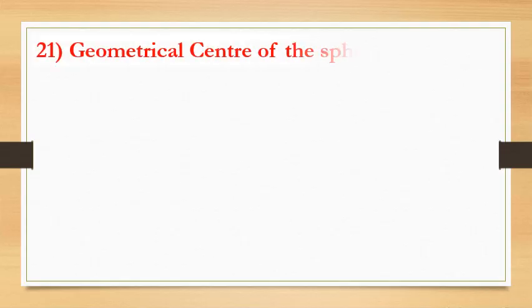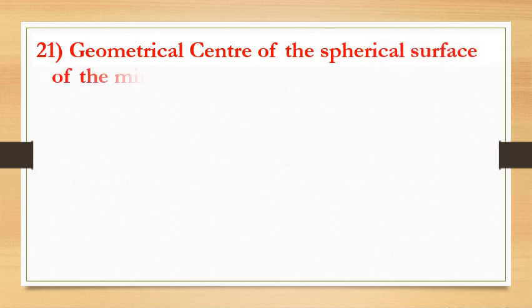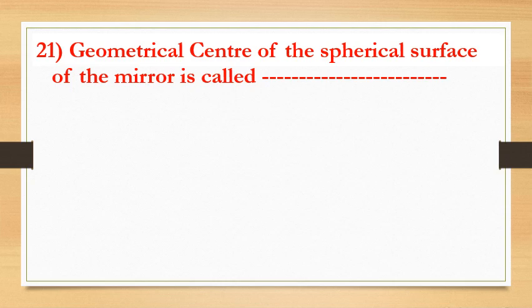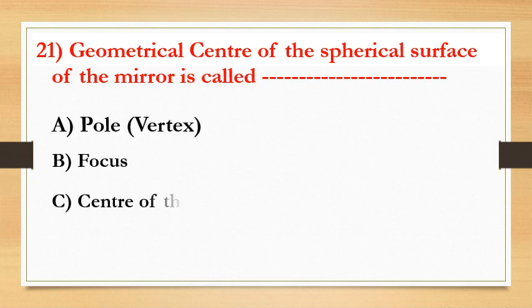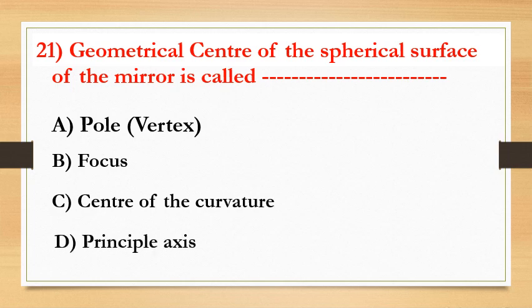The geometrical center of the spherical surface of the mirror is called — option A: pole, option B: focus, option C: center of curvature, option D: principal axis. The answer is pole. Observe the picture.